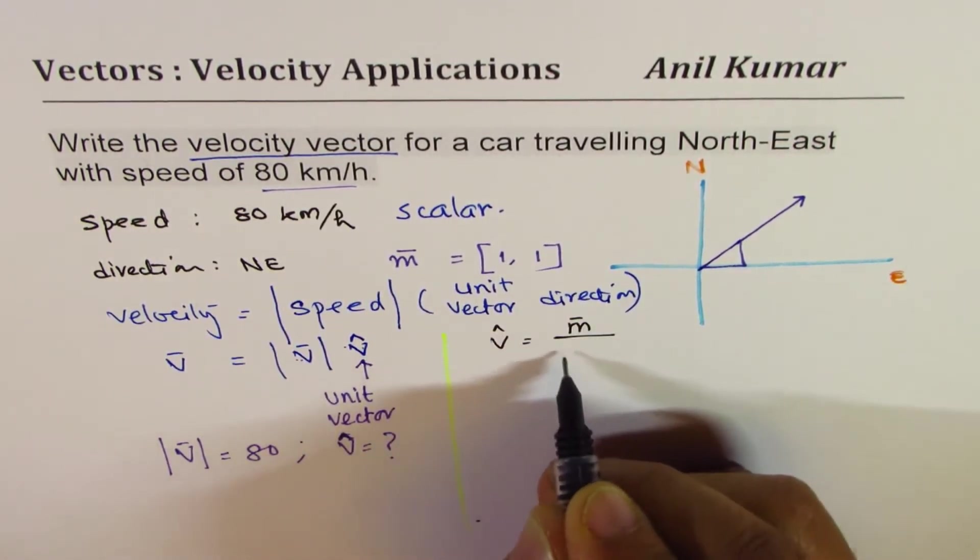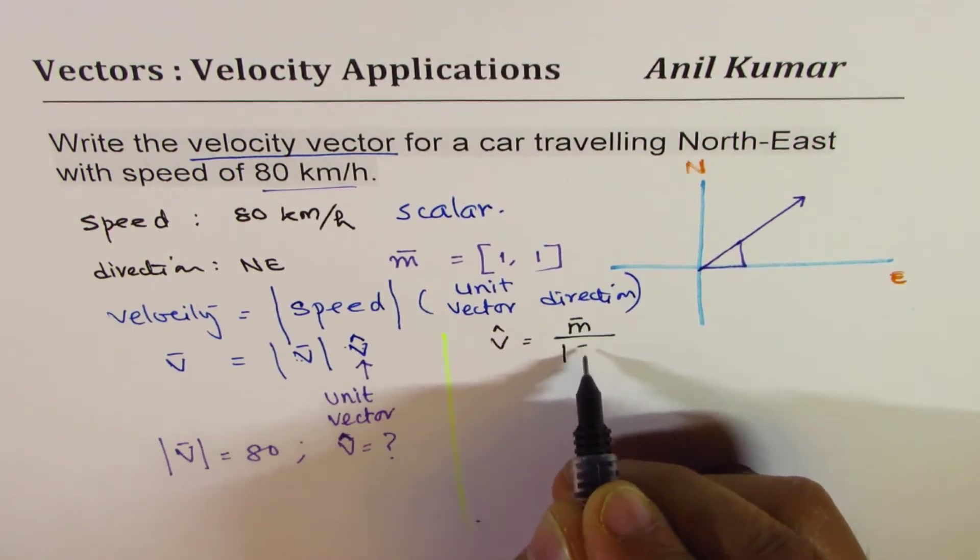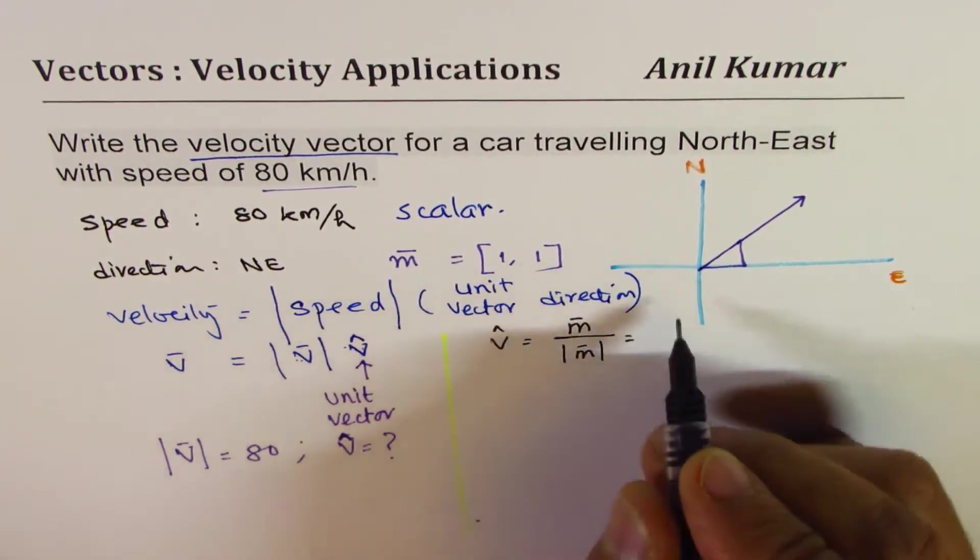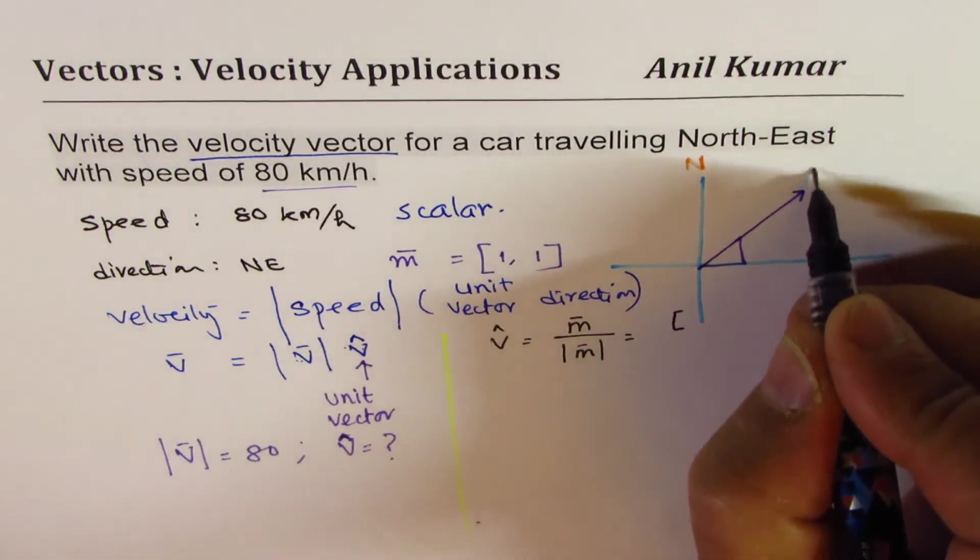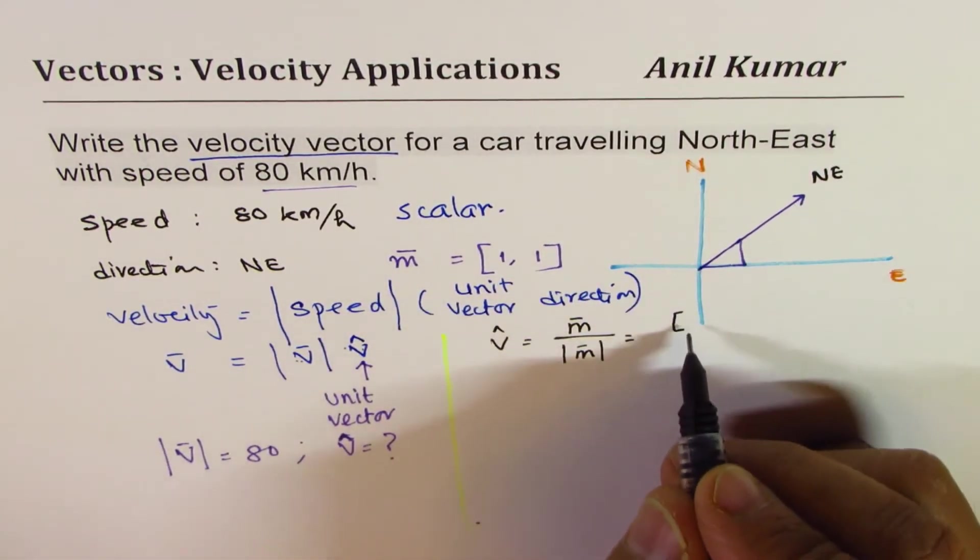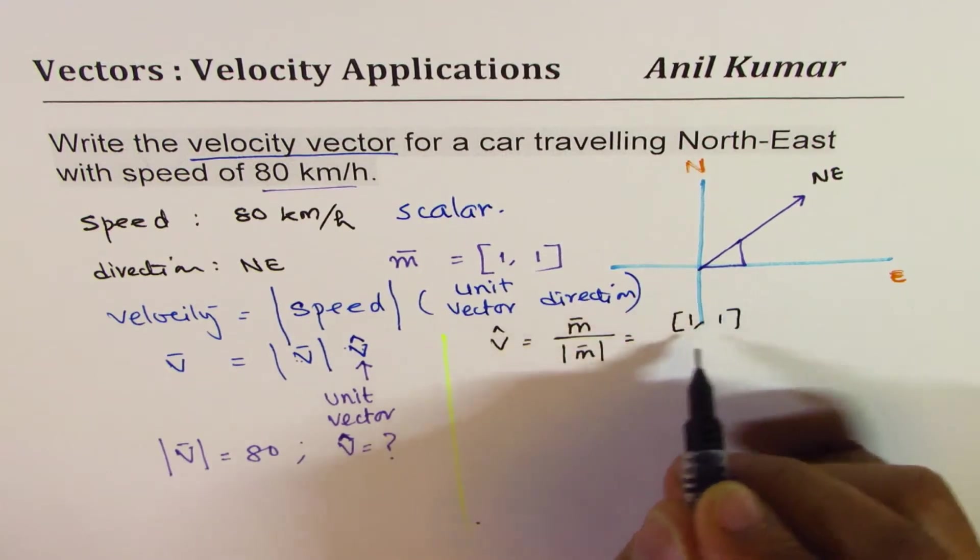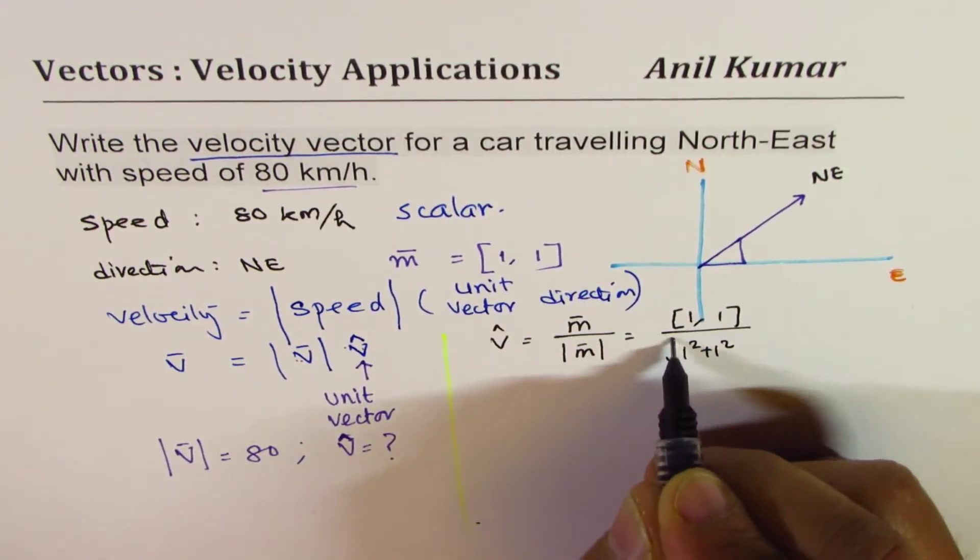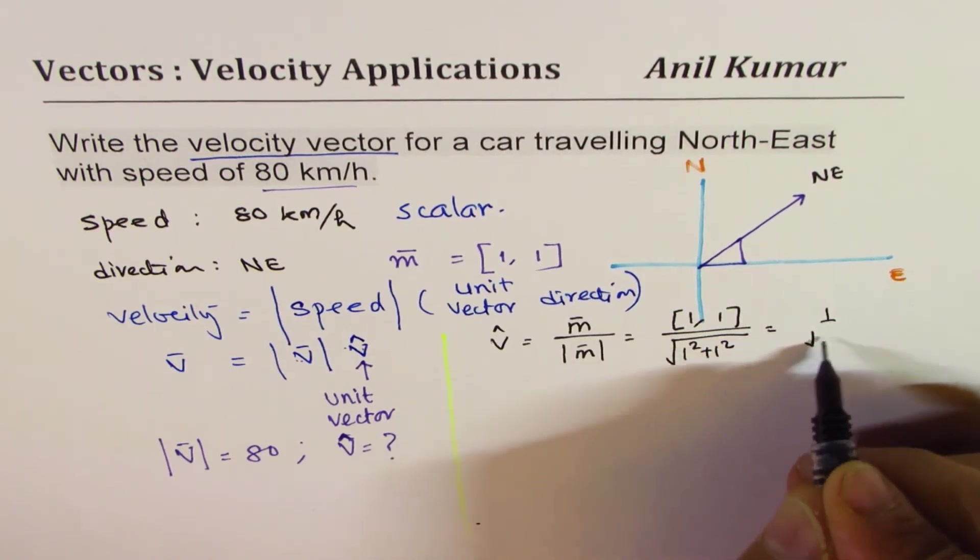Direction vector divided by its magnitude. In our case northeast, this is northeast means [1,1] is the direction divided by square root of 1 squared plus 1 squared, so which is 1 over square root 2, [1,1].